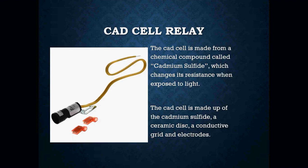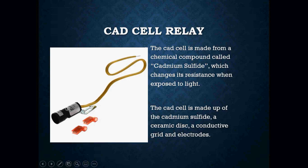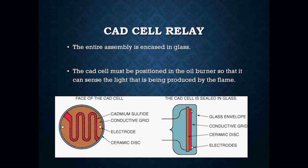The CAD cell itself is really what does all the work — it sends the signal to the primary control to tell us whether or not the burner actually lit. The CAD cell is made up of cadmium sulfide, which changes its resistance when exposed to light. The CAD cell eye sits inside the oil burner looking down the air tube. When the oil ignites, one of the byproducts of combustion is light, which the CAD cell picks up and changes its resistance. The cell also consists of a ceramic disc, a conductive grid, and electrodes, all encased inside glass.